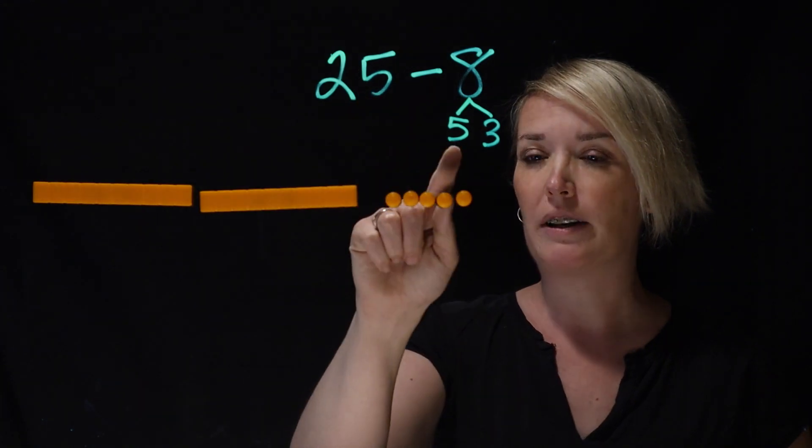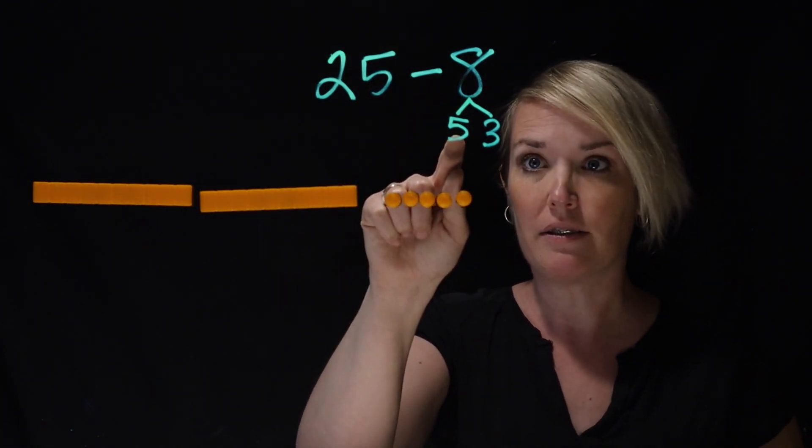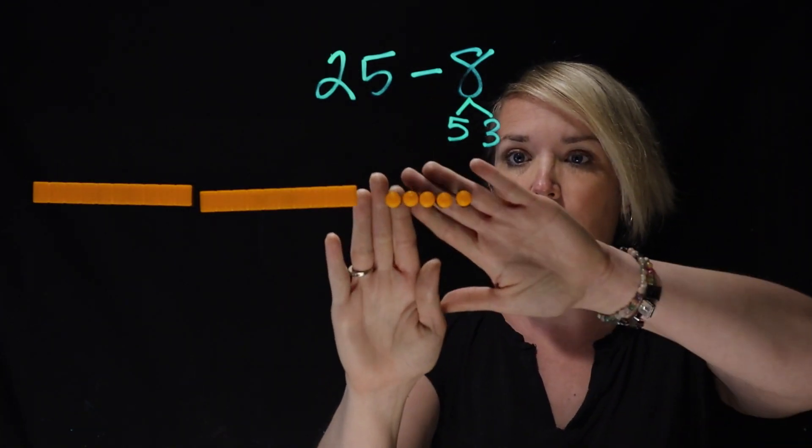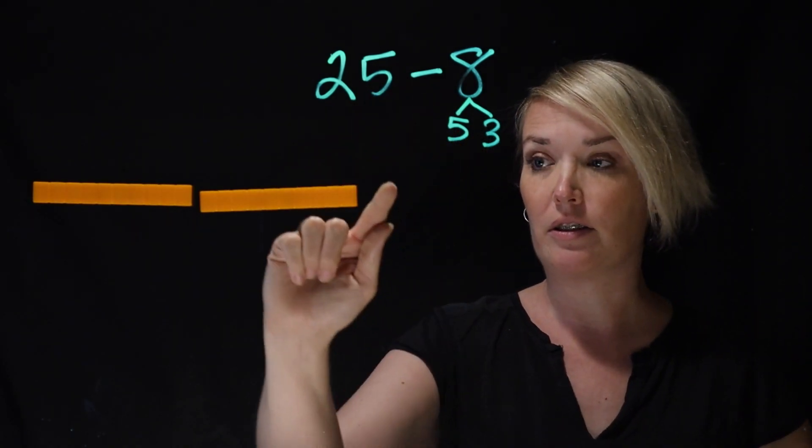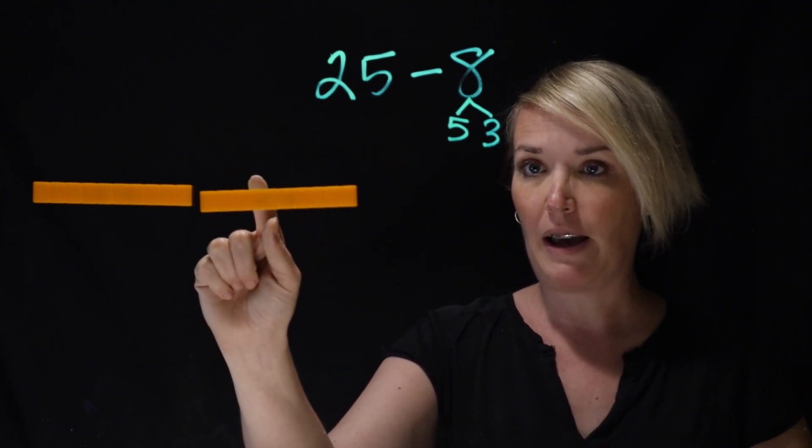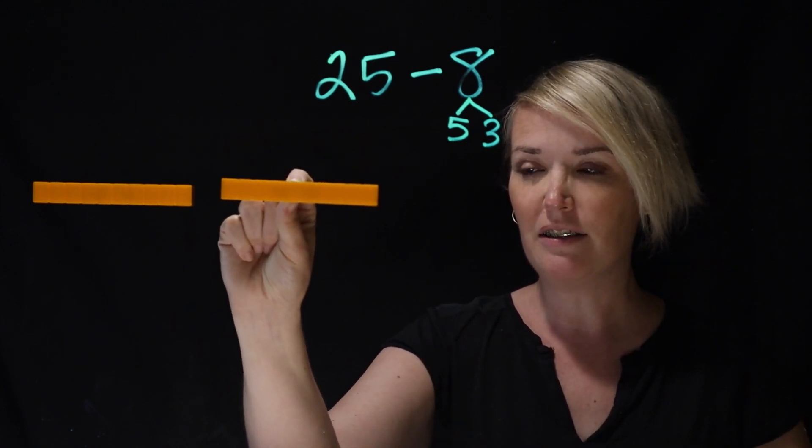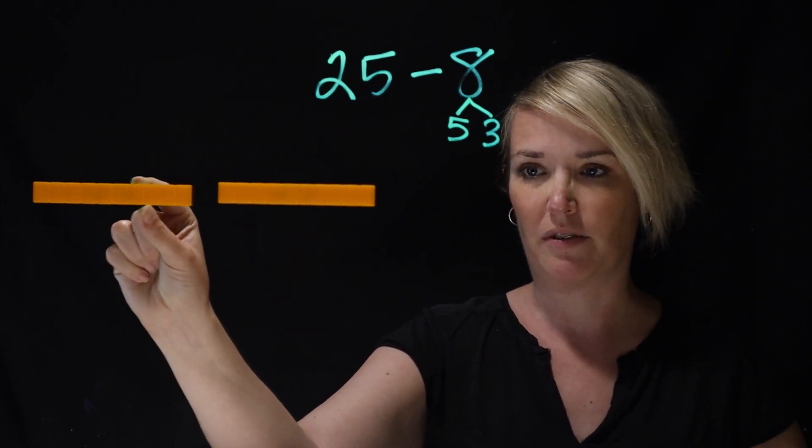So 25 minus 5. Now, she said she picked this split because, look, here's the 5. So 25 minus 5 is 20, but she said, well, I can't take away 3 from one of these.